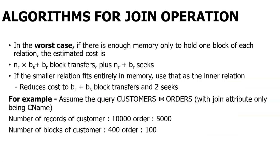How do you measure the cost? For the worst case — when you do not have enough memory — the formula is: NR × BS + BR block transfers, and NR + BR seeks. This is the number of blocks in one relation multiplied by the block size of the other relation. This applies only when your memory is not sufficient.